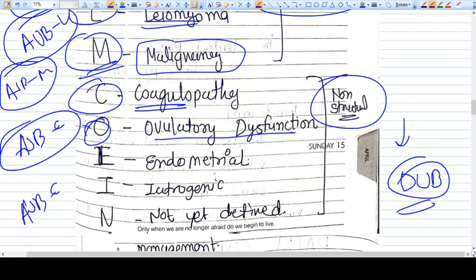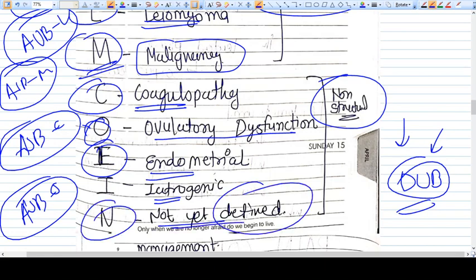O means ovulatory dysfunction. AUB-O can be called DUB because there is no structural problem, there is no obvious abnormality, so ovulatory dysfunction comes under DUB. E means endometrial abnormality. I means iatrogenic - we have inserted IUCD which can cause heavy bleeding, so it will be AUB-I. N means not yet defined.